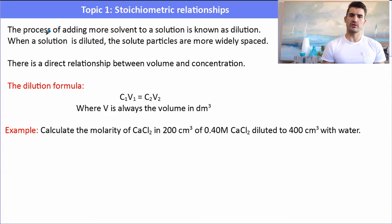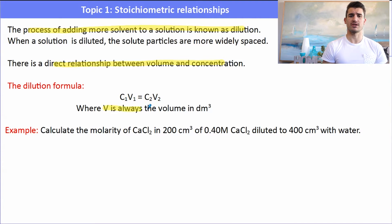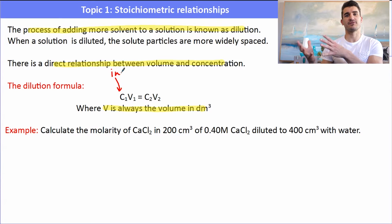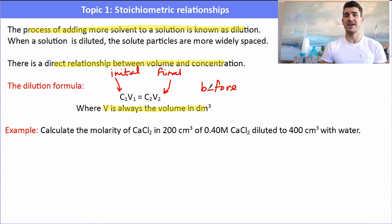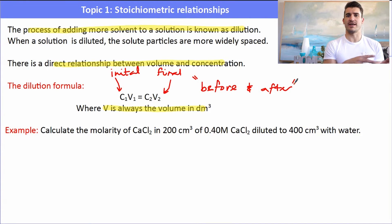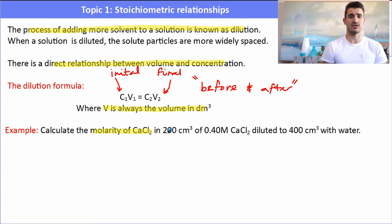The process of adding more solvent to a solution is known as dilution. When a solution is diluted, the particles become more widely spaced and the concentration decreases. There is a direct relationship between volume and concentration: C₁V₁ = C₂V₂ — an initial and final setup. You have your initial concentration and volume, you dilute with water, and then find the final concentration. In a question it's like a before and after.